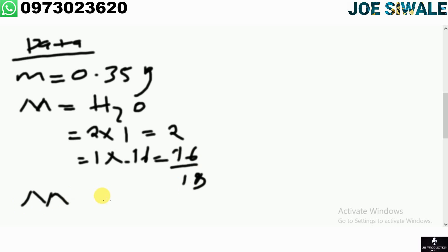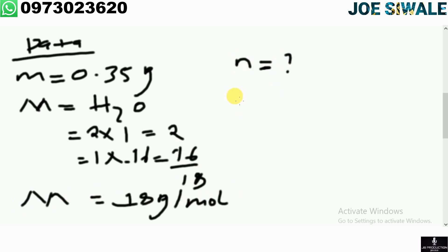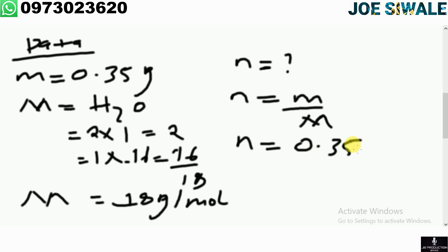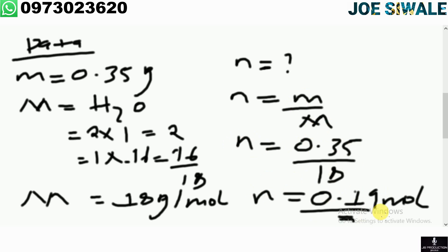To find the number of moles, we say N equals small m divided by capital M. N equals 0.35 divided by 18, which gives 0.019 moles. So the number of moles is 0.019 mol.